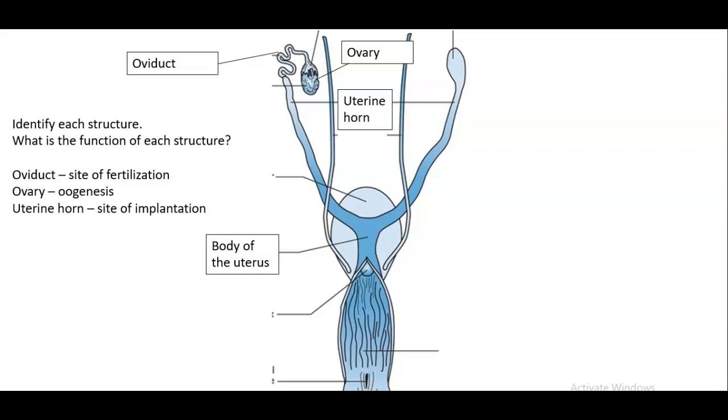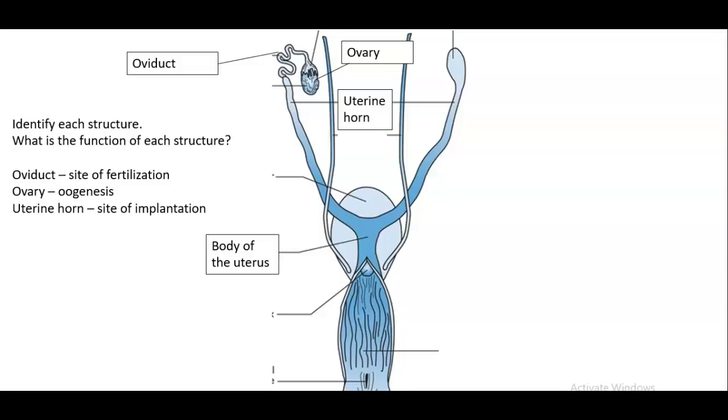So the body of the uterus is essentially just a passageway where the sperm makes its way up through and then up toward the oviduct for fertilization. And that is it.